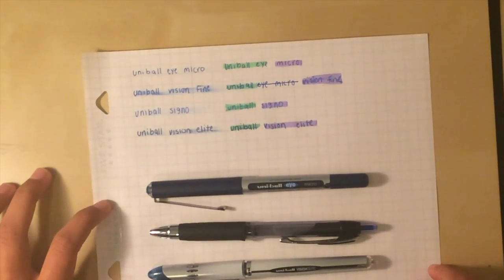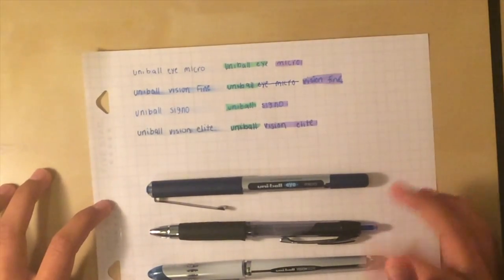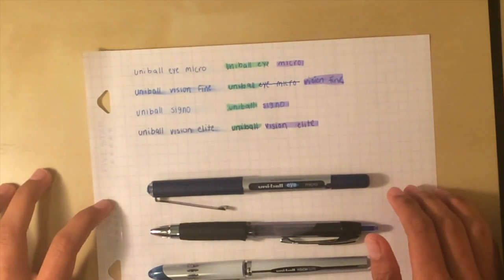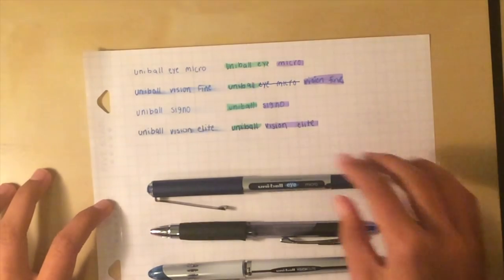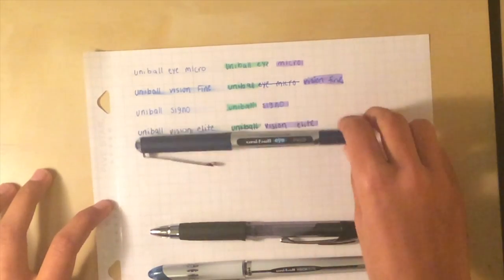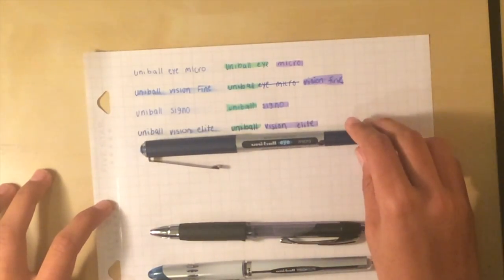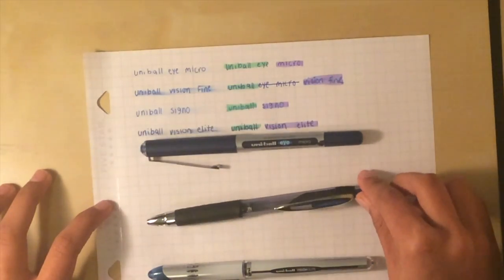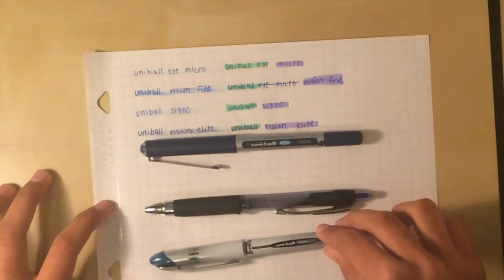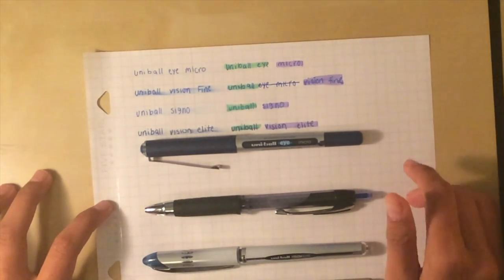Overall I'd probably keep this rating for the pens too. Not just for smear but overall I think the Micro Eye is the best option if you're buying a pen. Then the Signo, then the Vision Elite, and the Uniball Vision Fine.